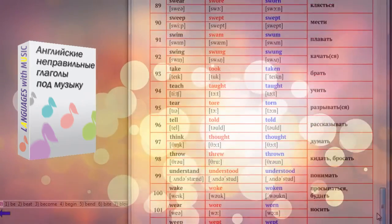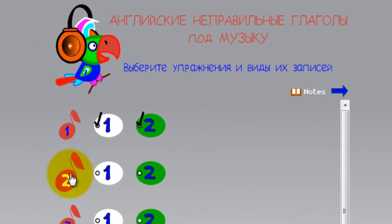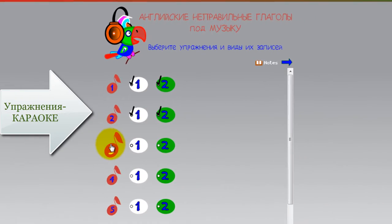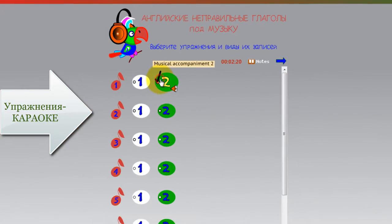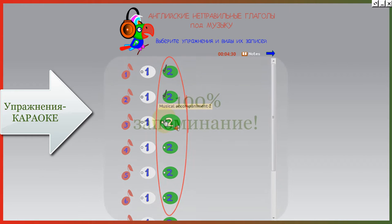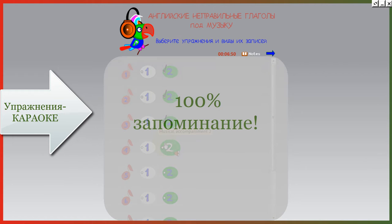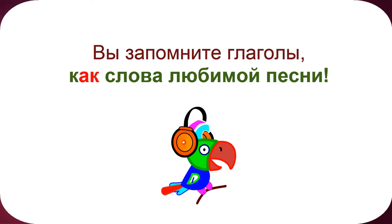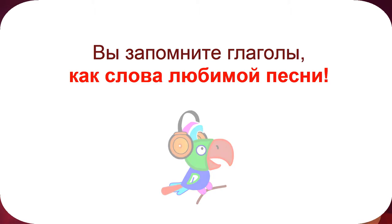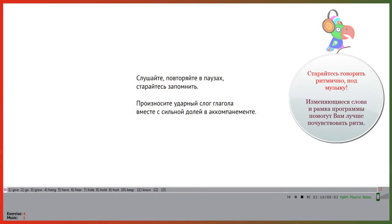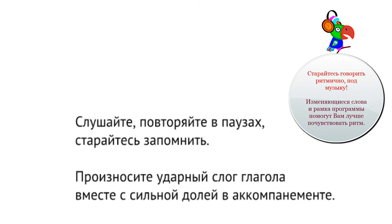Выберите группу или группы глаголов. Если вам нравится тихий аккомпанемент, выбирайте эти значки. А сейчас слушаем и повторяем. (Select a group or groups of verbs. If you prefer quiet accompaniment, choose these icons. And now, listen and repeat.)